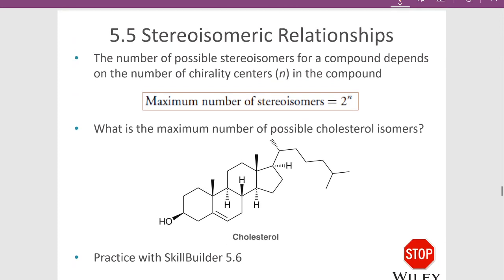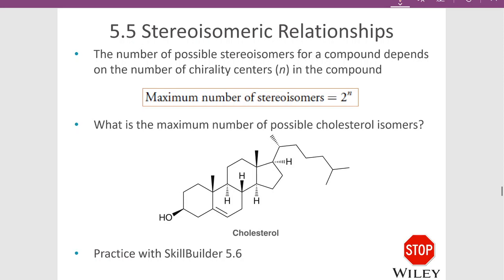Can we relate the number of stereoisomers to the number of chiral centers? The maximum number of stereoisomers for a molecule is 2^n, where n is the number of chiral centers. With 1 chiral center you get 2 stereoisomers (one enantiomeric pair); with 2 chiral centers, 2^2 = 4 possible stereoisomers; with 3 chiral centers, 2^3 = 8, as we saw. Note that if some substituents on chiral centers are identical, you may not reach that maximum.